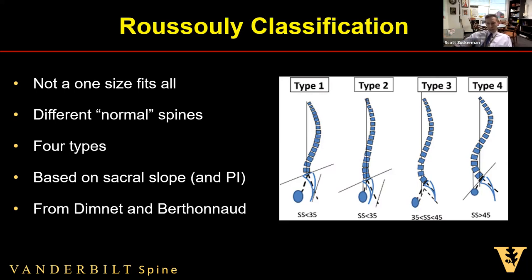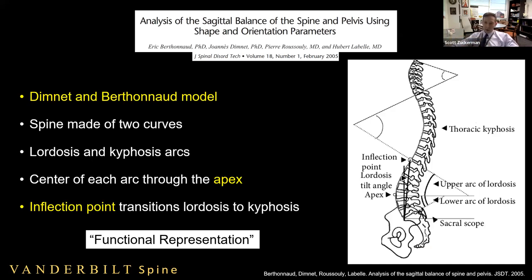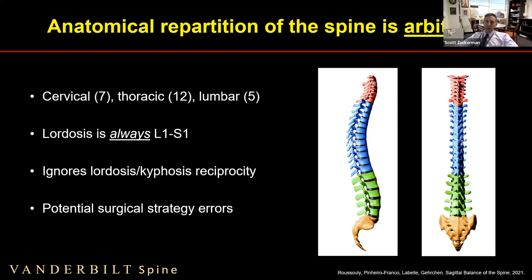PI is important as the spine degenerates, but the classification is based on sacral slope. Before getting into the different types, you have to understand the Dimnet and Berthonnaud model — published about 18 years ago — which is a different way of thinking about the spine: a functional representation rather than an anatomic one. The spine is described as two curves — a lordotic segment and a kyphotic segment — each with an apex, and the inflection point is where the spine transitions from lordosis to kyphosis. The anatomical model is really arbitrary, based on where the ribs end, and ignores lordosis-kyphosis reciprocity.